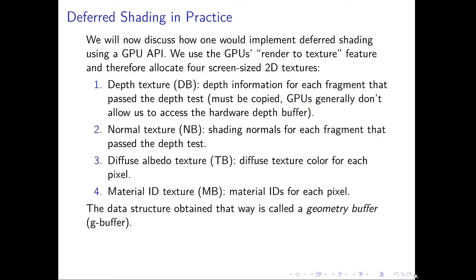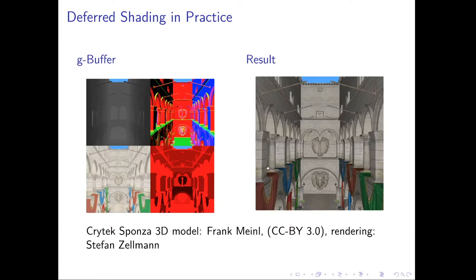This data structure is what people would call a geometry buffer, or GBuffer. GBuffers can have slightly different data layouts depending on the implementation. I rendered such a GBuffer myself and saved the various texture outputs to image files. This is what a typical GBuffer looks like: a buffer containing depth values mapped to gray values, a buffer containing normals, a diffuse albedo map, and a material ID texture.